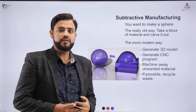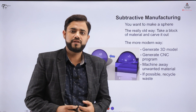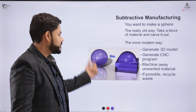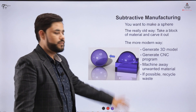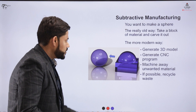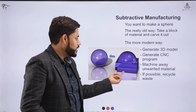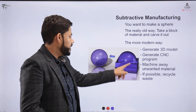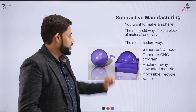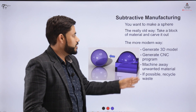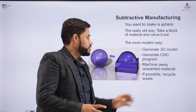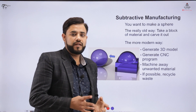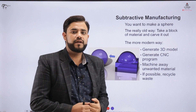Let me give you an example from scratch, which is the creation of a model on software. Let's say I have created a model of a sphere on the software and generated a CNC program to cut that object. The CNC program will machine away the unwanted material, which is possibly sent to recycling, and a half-spherical ball can be obtained. This is the modern way of machining an object, in connection with conventional manufacturing processes.